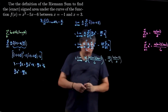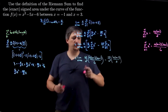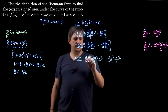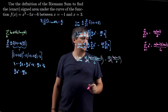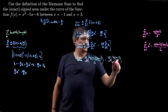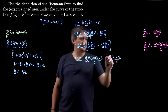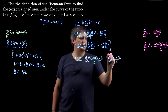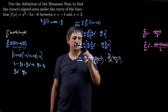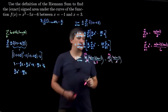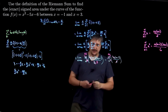Now I split the sum and pull out anything not related to K. The four over N multiplies everything, so I keep brackets. Sixteen over N squared doesn't depend on K, so it comes out: sixteen over N squared times the sum K from one to N of K squared. And twenty-eight over N can come out: minus twenty-eight over N times the sum K from one to N of K. Now I need those closed-form formulas.